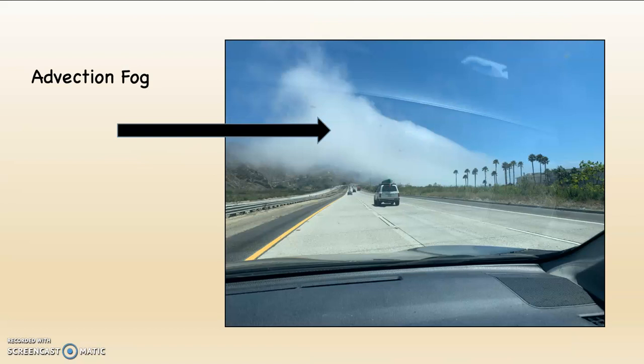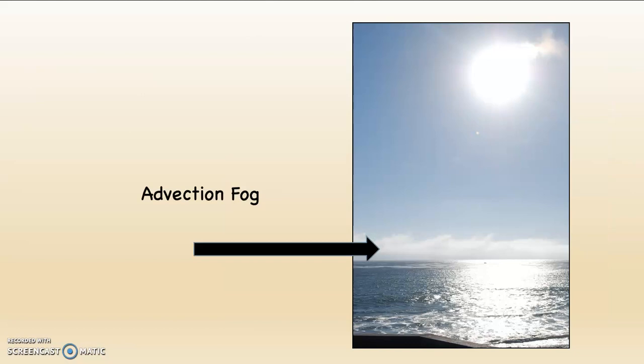Earlier in the summer I had been driving back from Pismo Beach, and we were in Ventura. A perfect advection fog was flowing across the 101 freeway. I was grabbing my phone to take pictures because it was just so perfect — it was flowing right across the freeway, exactly as it's supposed to do. This picture, which I also showed with regard to albedo, was taken in central California with the sun setting. You can see the fog offshore.